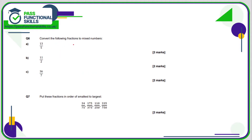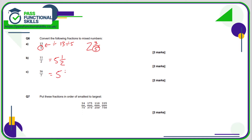Question six: converting fractions into mixed numbers. How many fives go into thirteen? The line in a fraction means divide, so thirteen over five is thirteen divided by five. Five goes into thirteen twice with a remainder of three, so the answer is two and three fifths. The denominator is always the same in the mixed number as in the improper fraction. Eleven over two: two goes into eleven five times with one remaining — five and one half. Thirty-six sevenths: seven goes into 36 five times with one left over — five and one seventh.